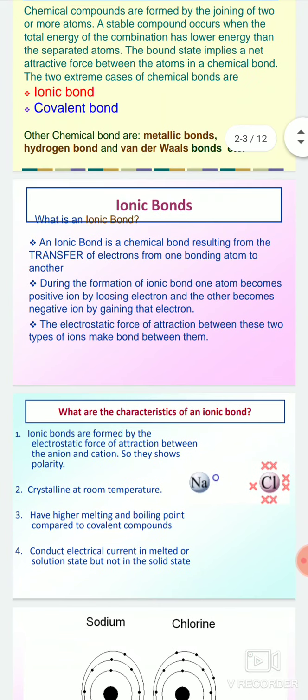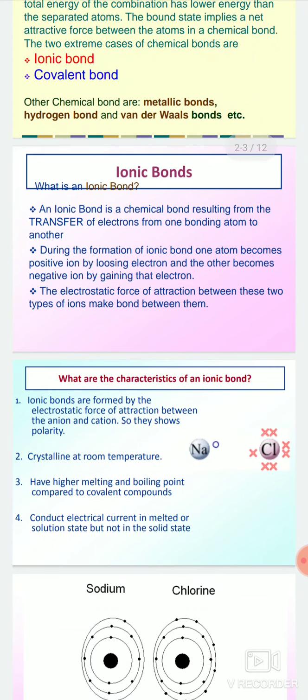So what is an ionic bond? An ionic bond is a chemical bond resulting from the transfer of electrons from one bonding atom to another. By electron transfer, one atom loses electrons and another atom gains electrons, creating an ionic bond.